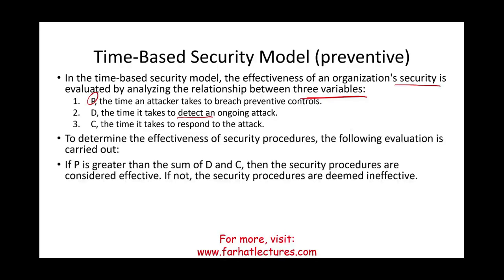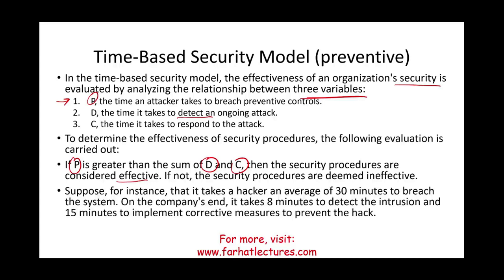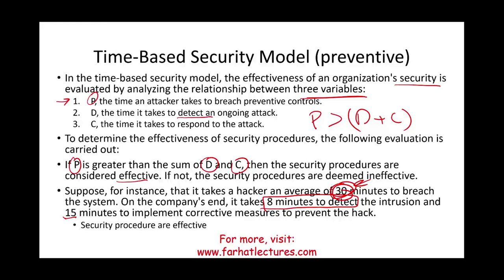To determine the effectiveness of a security procedure, P must be greater than the sum of D and C. For example, if it takes a hacker 30 minutes to breach the system, 8 minutes for us to detect the attack, and 15 minutes to respond, then P (30 min) is greater than D + C (23 min), meaning the attacker will not have enough time to achieve their objectives. If that condition is not met and they can get in before we detect and respond, it's too late.